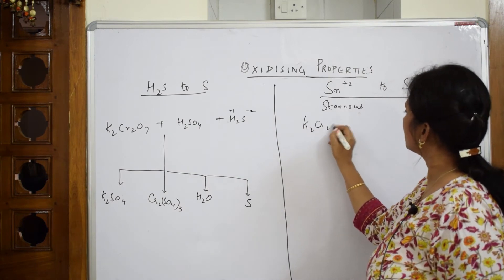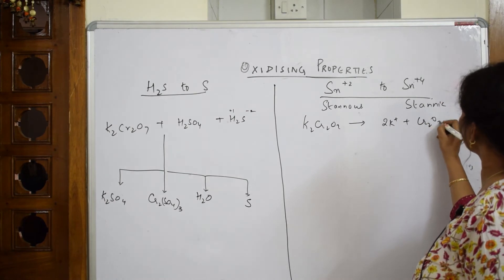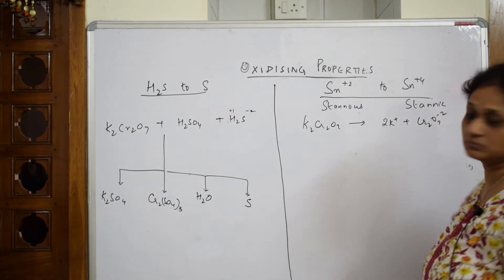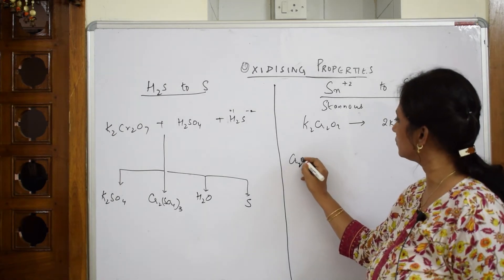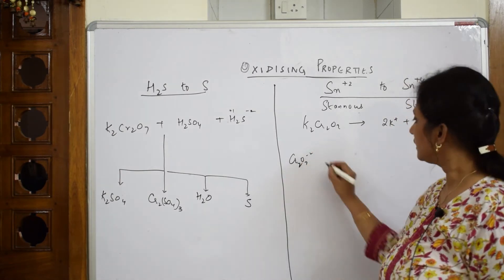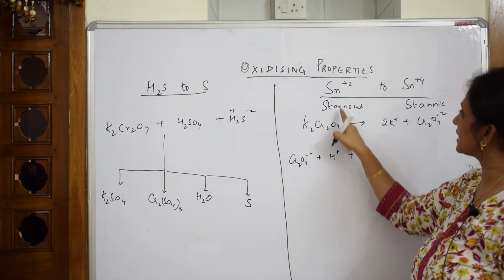When I take potassium dichromate, K₂Cr₂O₇, it breaks up into 2K⁺ + Cr₂O₇²⁻. Now I'm going to take this ion Cr₂O₇²⁻. I'm going to add acid in the presence of acidic medium, I'll take H⁺. I'm not writing the whole thing, I'm writing the ionic reaction. Plus I'm going to take the stannous chloride Sn²⁺.